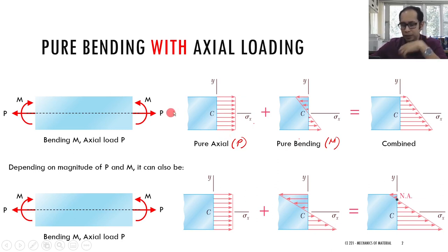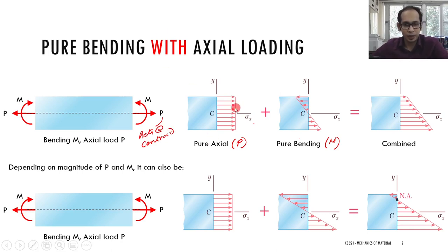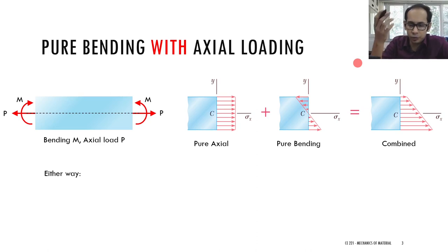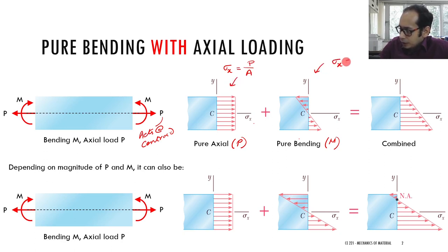One important thing to note is that the stress due to P is uniform throughout, because P acts at the centroid. Hence, since it acts at the centroid, sigma x from P is a uniform distribution. For this particular case, if we write out our sigma x: it is P divided by A for the axial part, and minus My divided by I for the bending part.